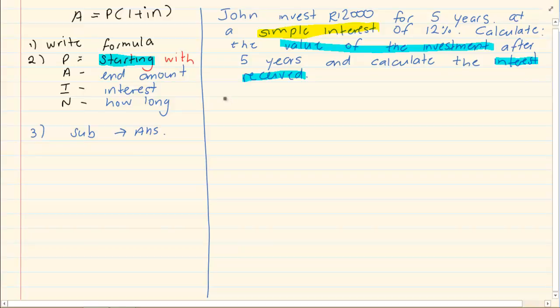Number two, we write down our P. So our P is what are we starting off with, which is 12,000. We don't know what we are going to end up with. Our interest is 12%. Now the best way to write it is 12 over 100.